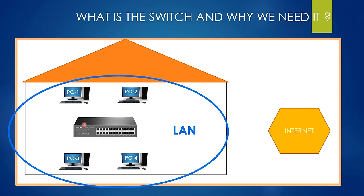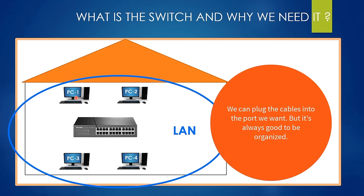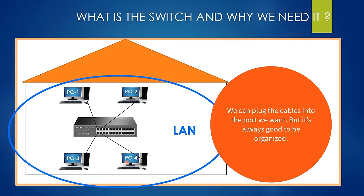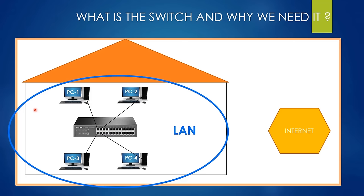To establish a connection between computers and the switch, we connect the LAN port on the computer and the LAN port on the switch with the help of a cable. Let's connect PC one to this port, then PC two, then PC three, and finally PC four. Currently, these computers can communicate with each other.